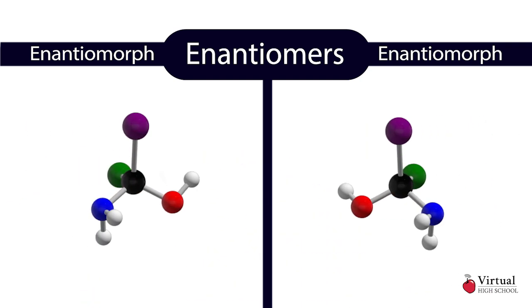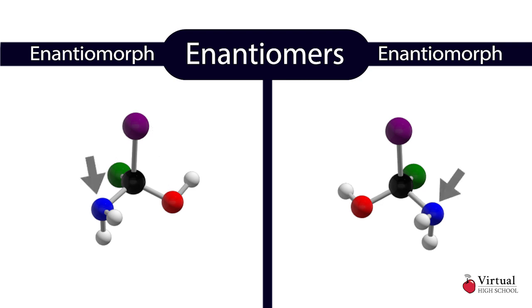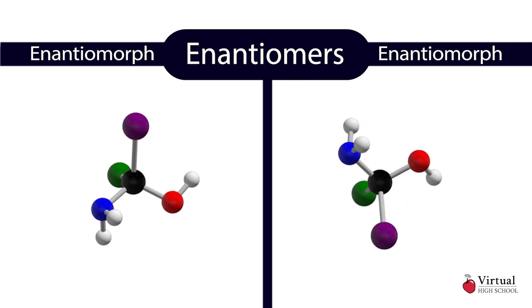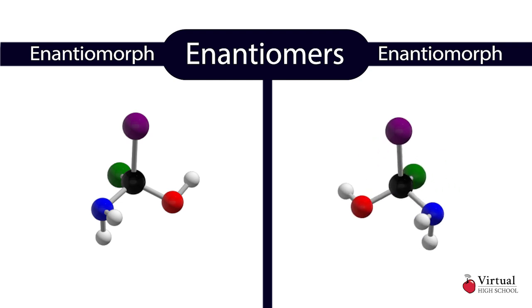Consider these two hypothetical molecules, both with a central carbon bonded to hydroxyl, bromine, chlorine, and amine groups. They cannot be rotated or oriented such that they are the same — they are unique molecules with unique spatial configurations and are therefore stereoisomers.